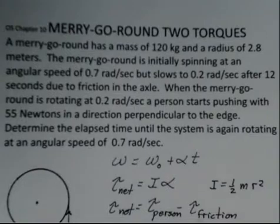The torque of friction. How do we come up with a number here? The torque of the person, that's not going to be difficult. Torque is force times lever arm. So it's going to be the 55 Newtons and the 2.8 meters for the torque.